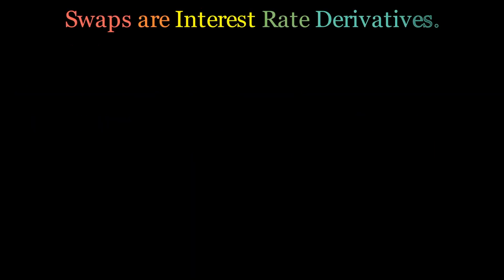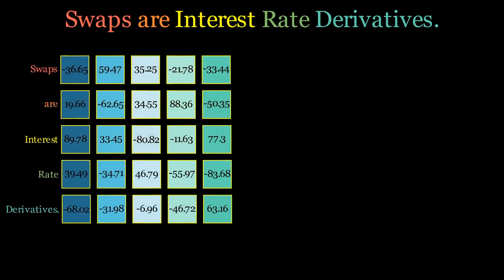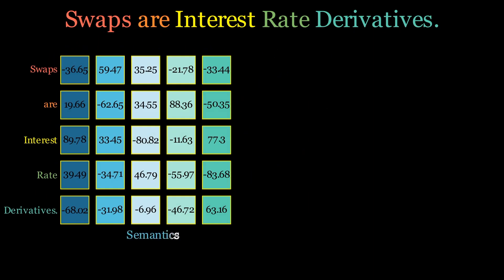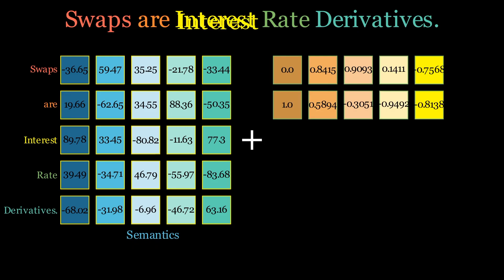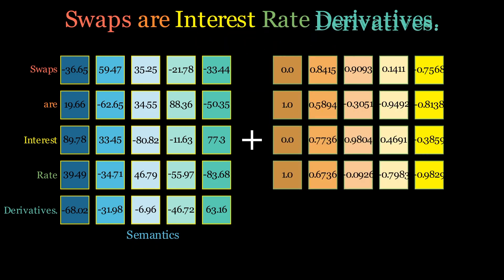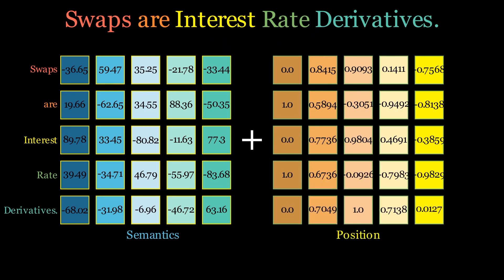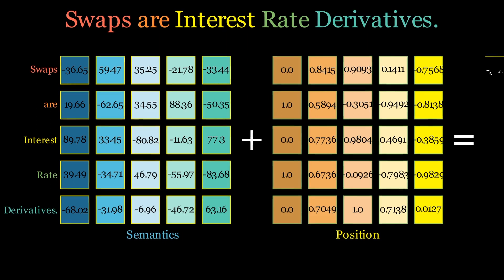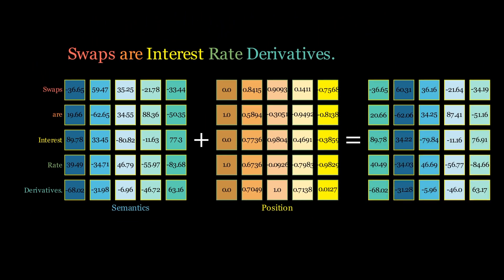The first thing that the encoder does is convert these words into vectors. To understand how this so-called semantic embedding works, please see the second video in this series. The next thing the encoder does is add positional embeddings to these vectors to record the position of each word in the sequence. The third video in this series concerns positional embeddings.